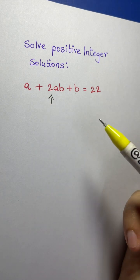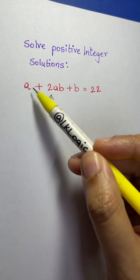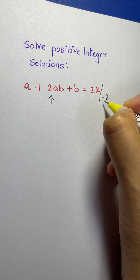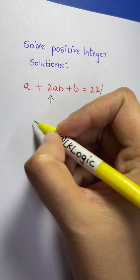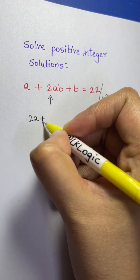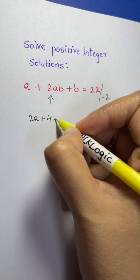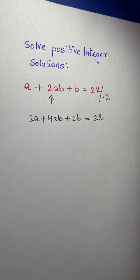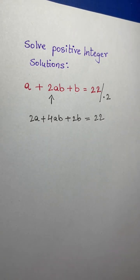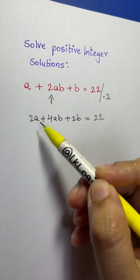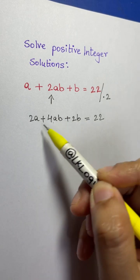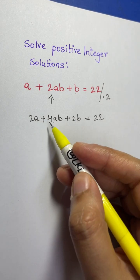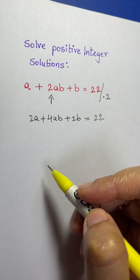Before factorizing, what we can do is make the coefficients of a and b equal to 2 by multiplying both sides by 2. So multiplying both sides by 2 gives: 2a + 4ab + 2b = 44. Now we have the coefficients of a and b as 2, and when you multiply 2 times 2 you get 4. Now it looks a bit better.